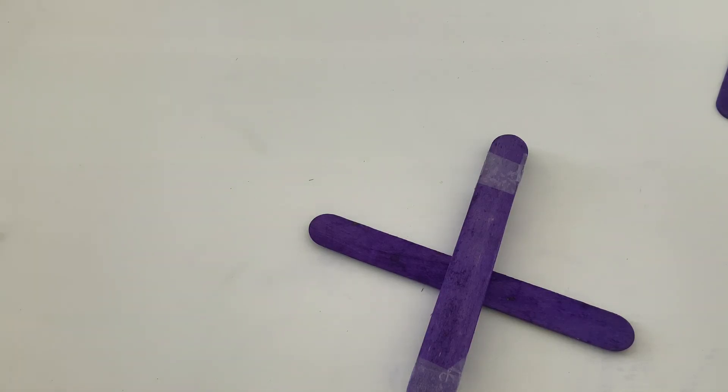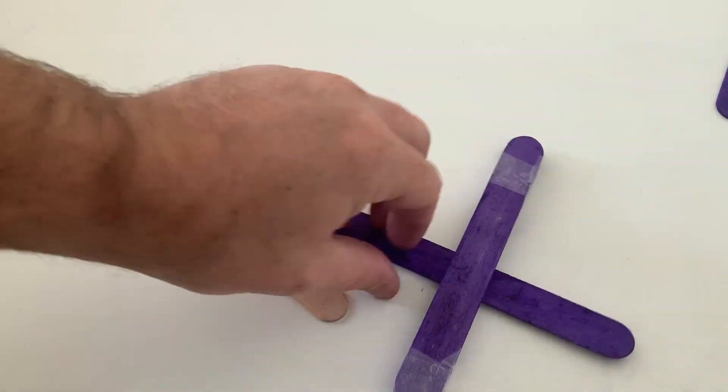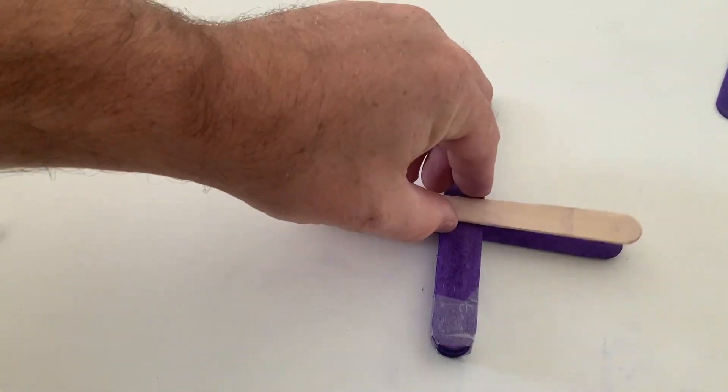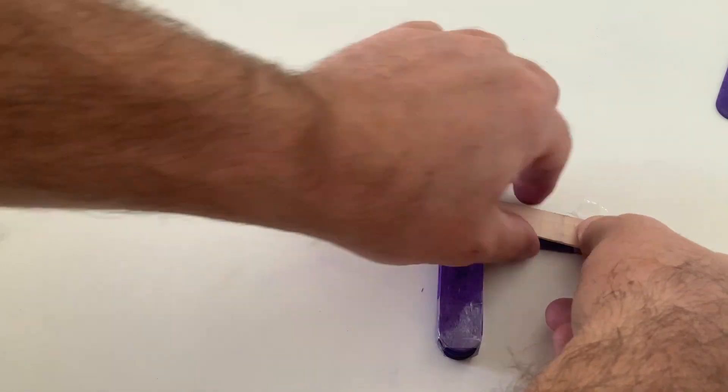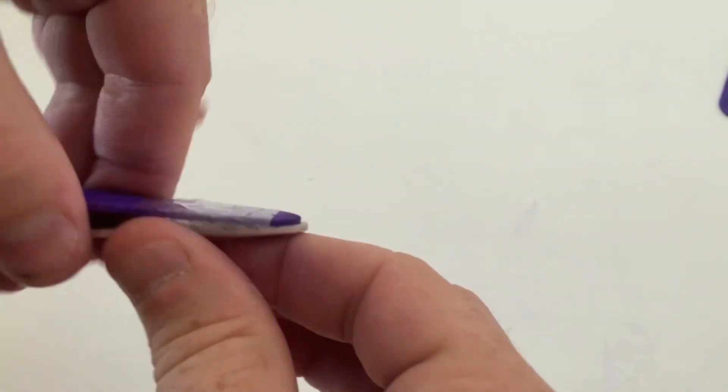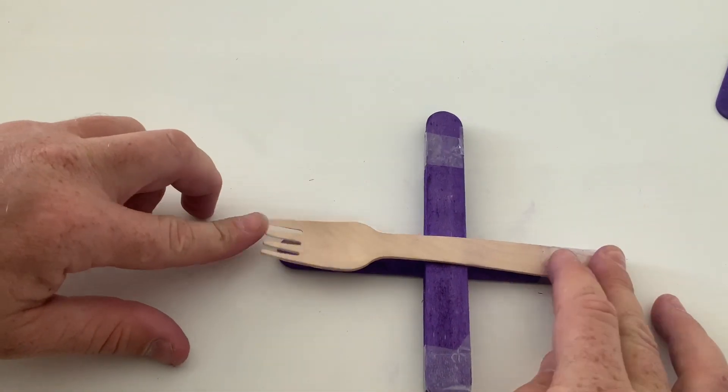This thin lollipop stick is what you're going to attach the materials that you're going to test to. Here I'm testing a wooden fork for its flexibility. I'm going to sticky tape down one end of the wooden fork. And I have created my catapult.